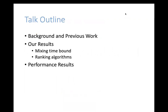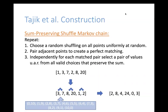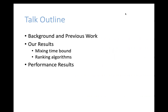In our talk, we'll go into more detail on the background and previous work, and present three main results. First, a formal mixing time bound — an upper bound on how many times we need to repeat the algorithm by Tajik et al., proved using a path coupling technique. Second, two algorithms for ranking and unranking integers with a given sum, which can be combined in a rank-then-cipher-then-unrank approach to create new sum-preserving encryption schemes. Finally, we give performance results comparing all three algorithms, including the shuffling-based algorithm and the rank-cipher-unrank approach.